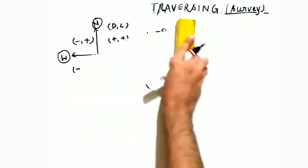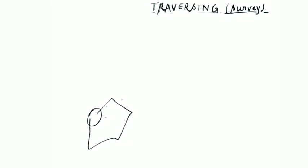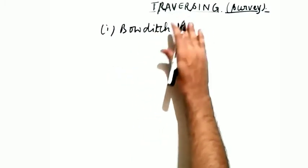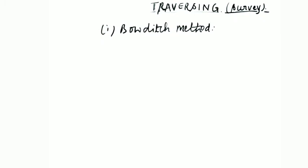There are two methods to correct latitudes and departures so that there is zero closing error. The first is the Bowditch method and the second is the transit method. Bowditch method is used when angles and lengths are measured with equal precision. If angles are measured more precisely than lengths, we use the transit method. The reason will be clear from the formulas.